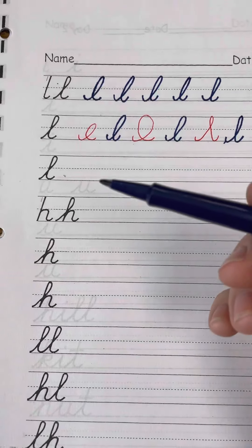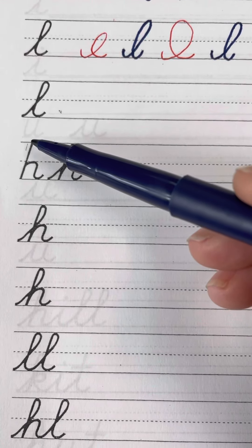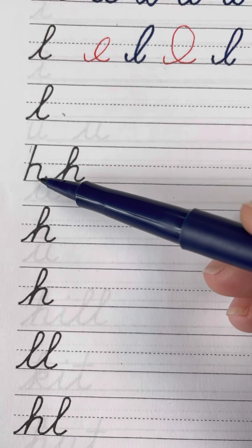So I'm going to start with my blue pen to show you the correct way. Here is a regular h - you would start at the top and pull down and go up over the hill.